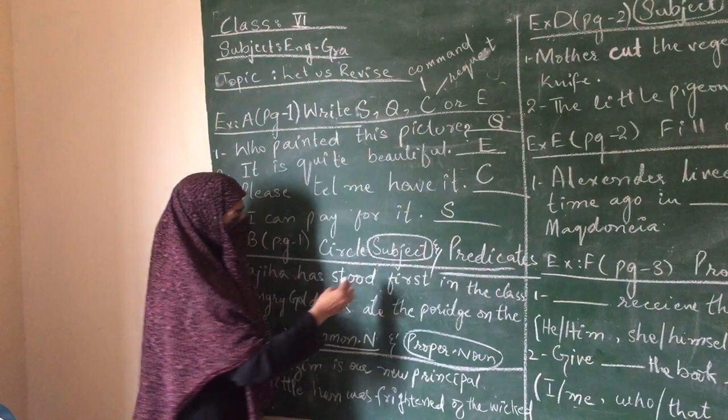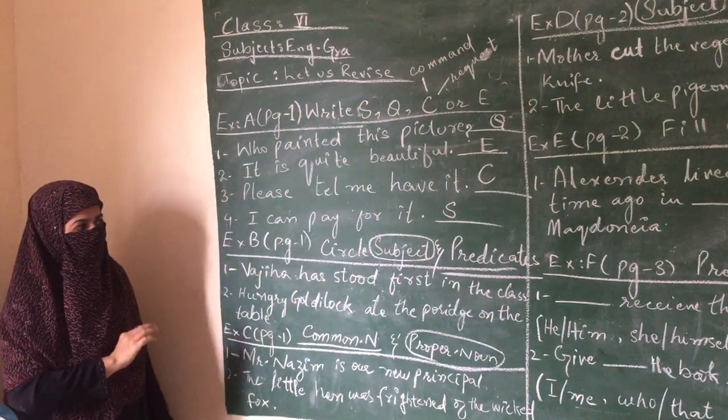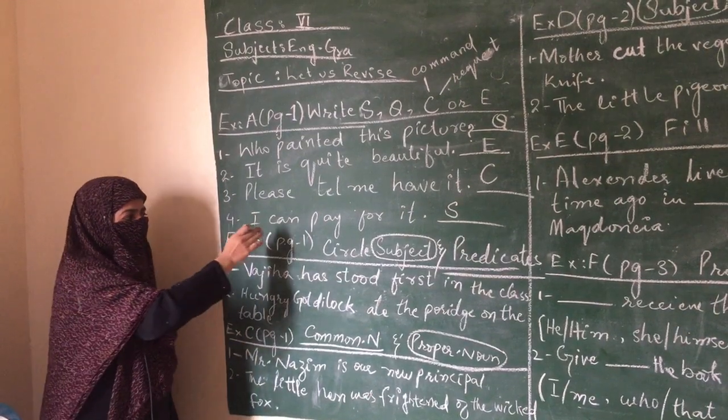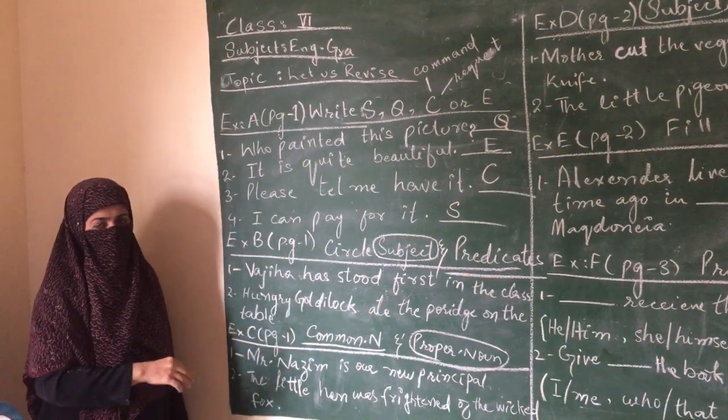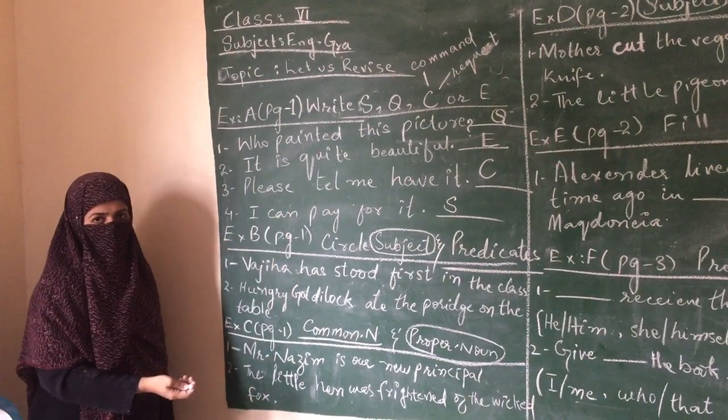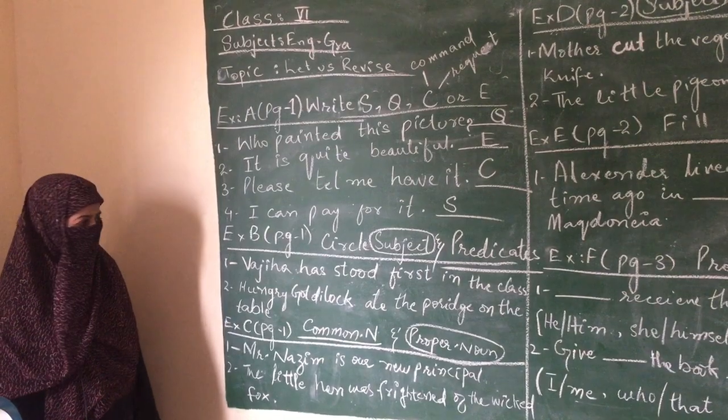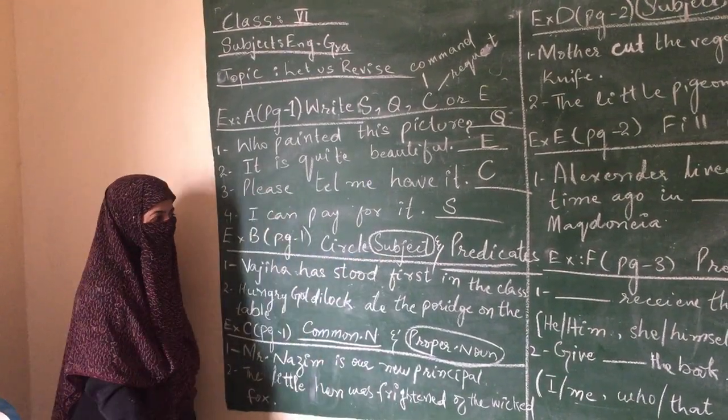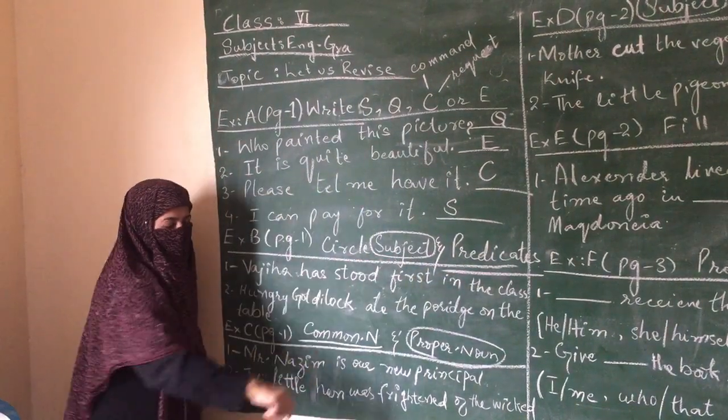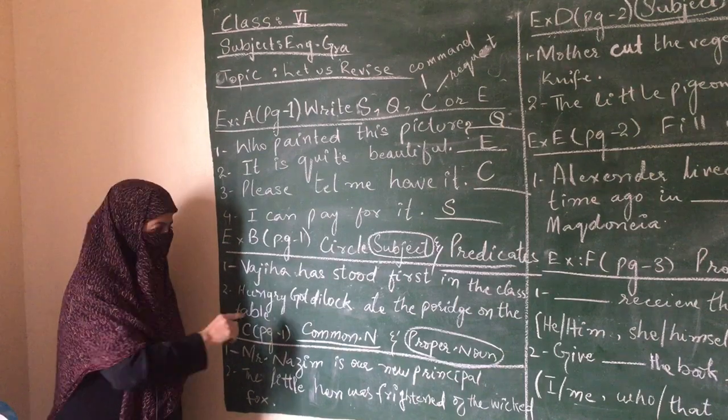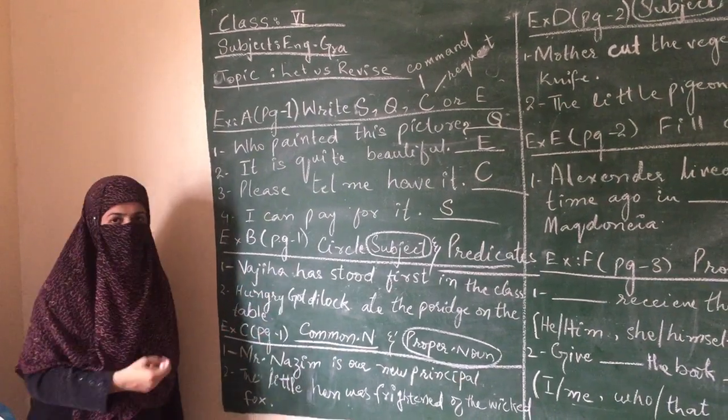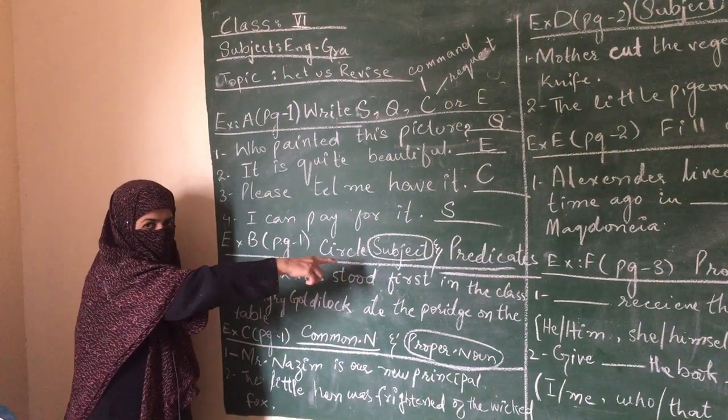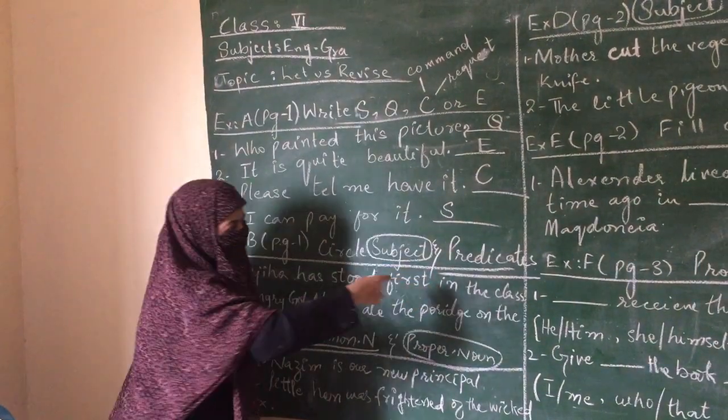So we put S. It is just a sentence, not an exclamatory sentence. There is no feeling expressed here, no question being asked, no command or request. Only that I will pay for it. That's why we put S. Now look for exercise B.